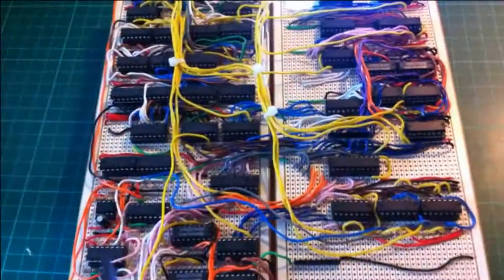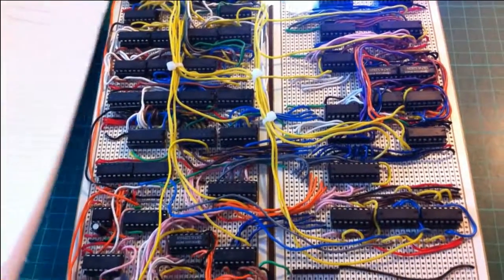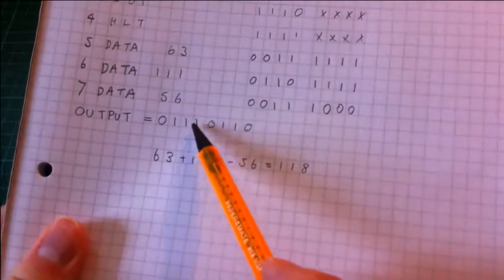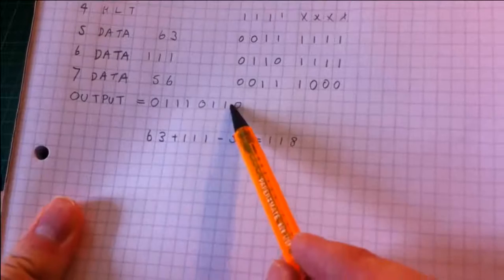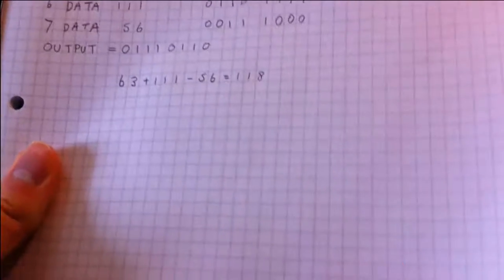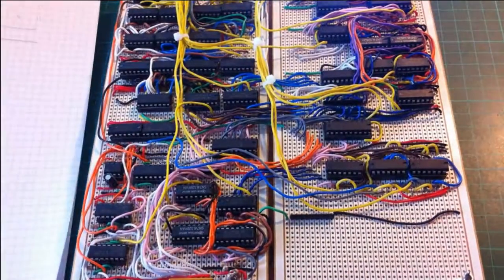So if we compare that with our expected output, we see that that is 0, 1, 1, 1, 0, 1, 1, 0 or 118. Excellent.